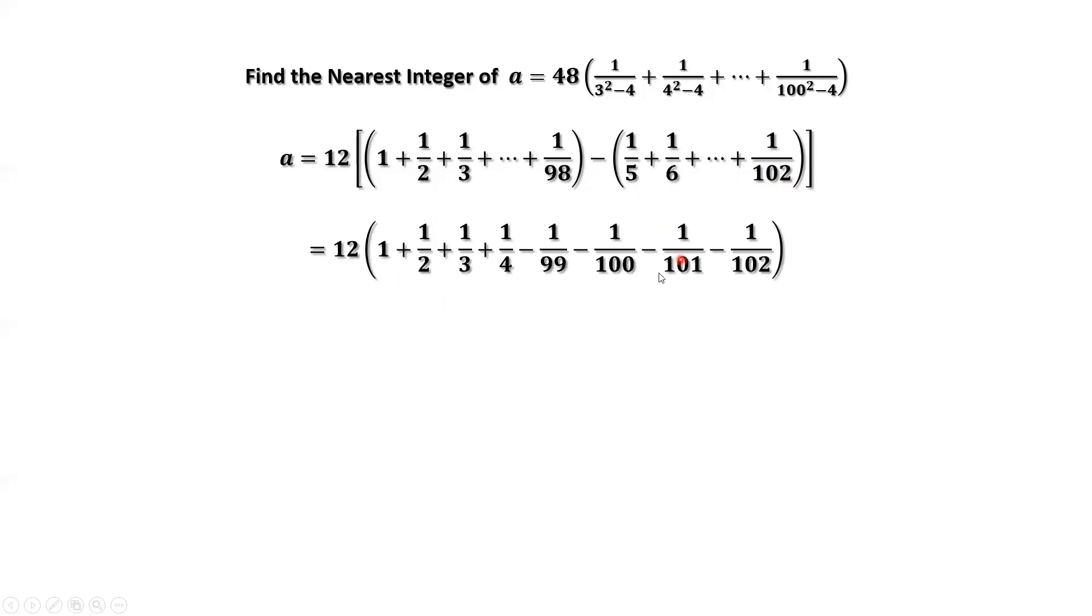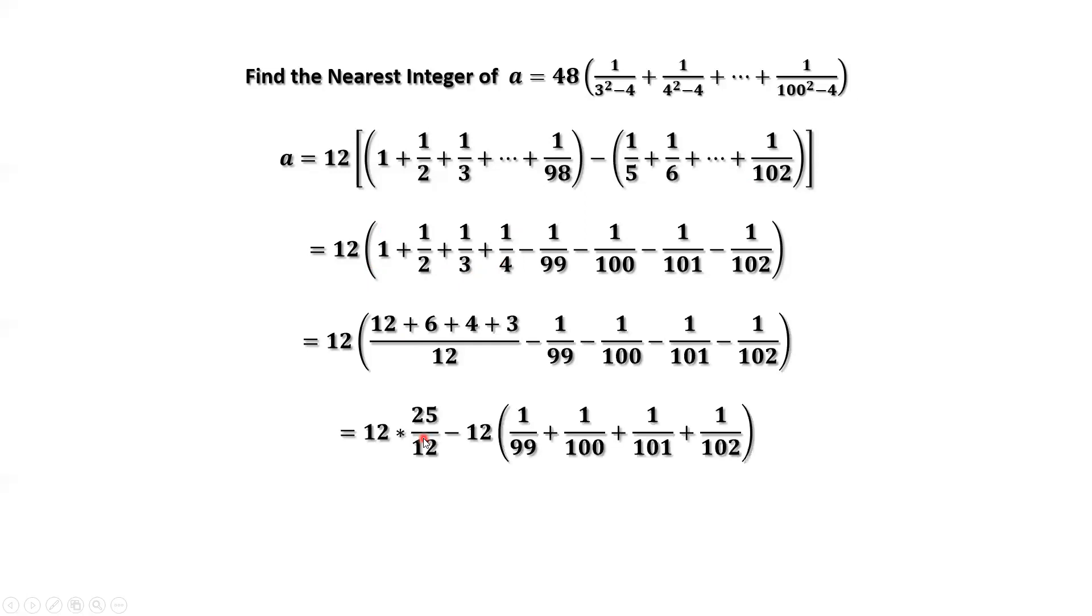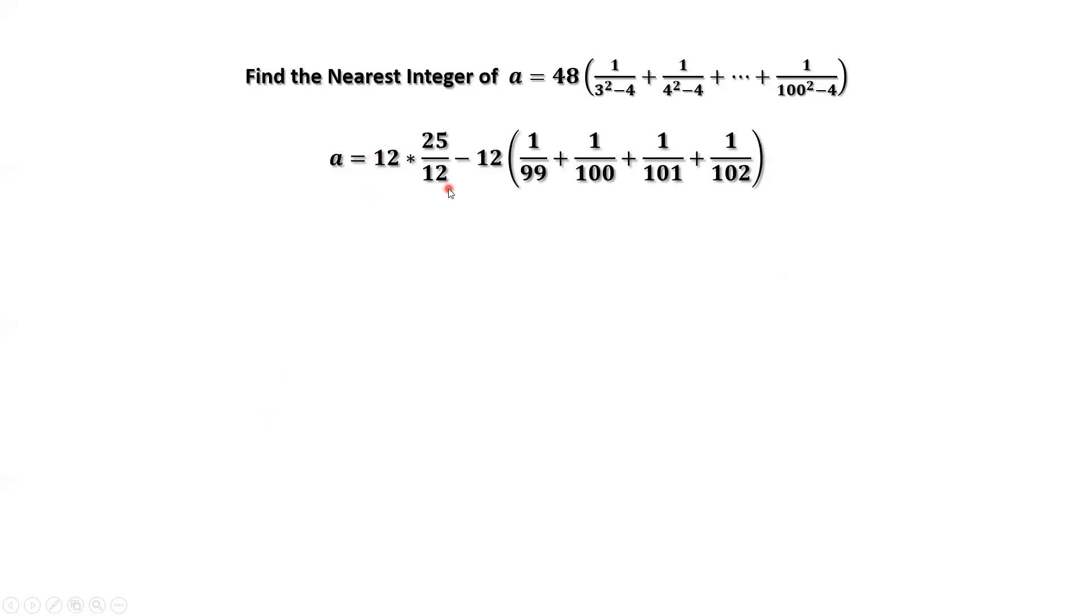This is the idea. You can see that the common denominator of the sum of the first four terms is 12, and 12 and 12 cancel each other. We have a equals 25 minus 12 times 1 over 99 plus 1 over 100 plus 1 over 101 plus 1 over 102.